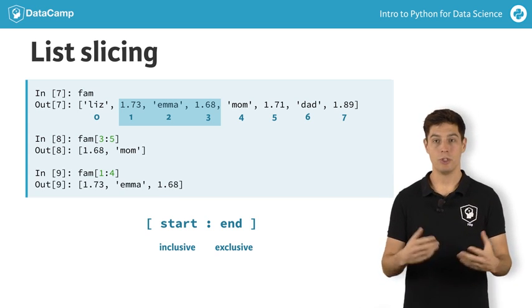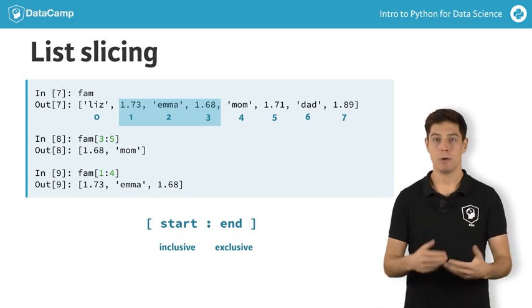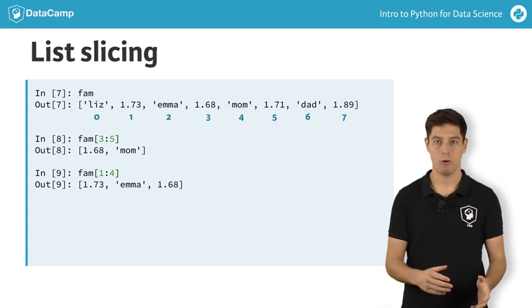You can also choose to just leave out the index before or after the colon. If you leave out the index where the slice should begin, you're telling Python to start the slice from index 0, like this example.